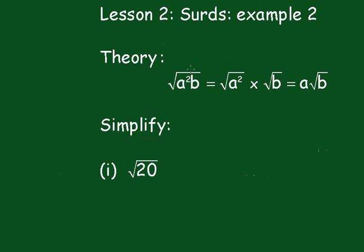This is the theory. The square root of a squared b is... we can split this up as the square root of a squared times the square root of b. And we know the square root of a squared is a, so this becomes a root b. It's a very important process in simplifying surds.